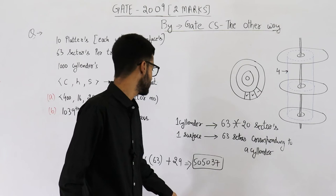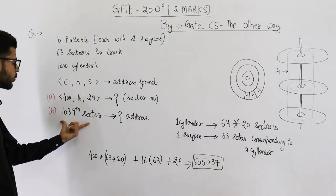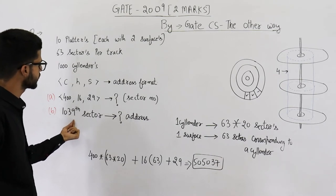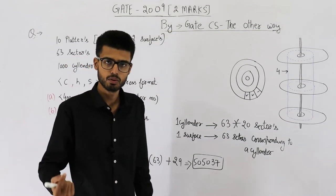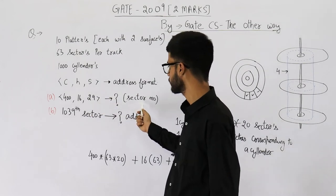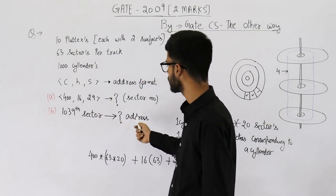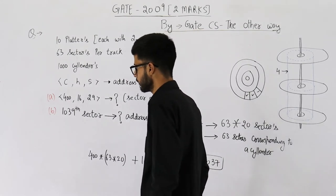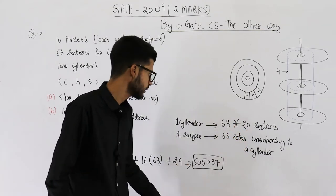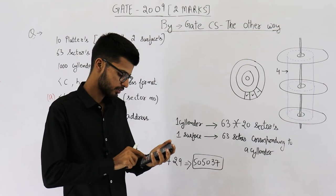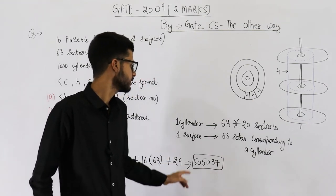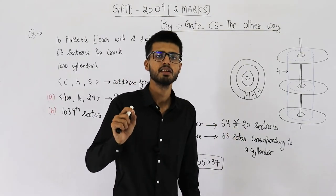Now let's try part B of this question. They are asking: what will be the address corresponding to sector number 1039? This means we are doing the reverse of part A — here we converted address into sector number, but now we are converting sector number into an address.